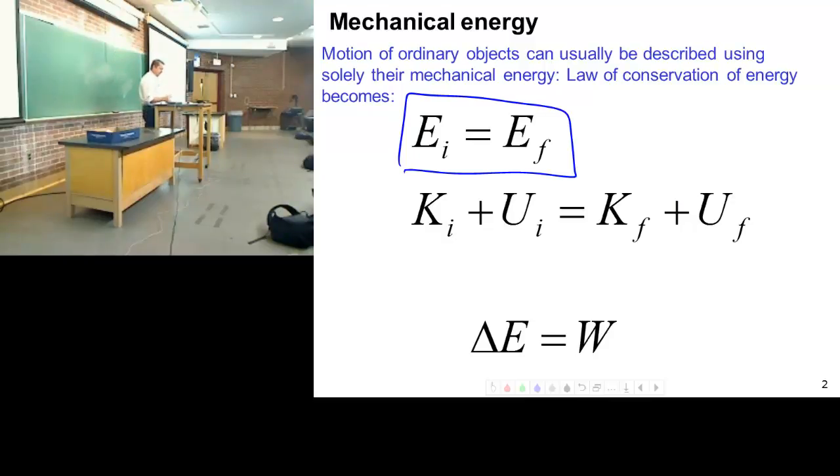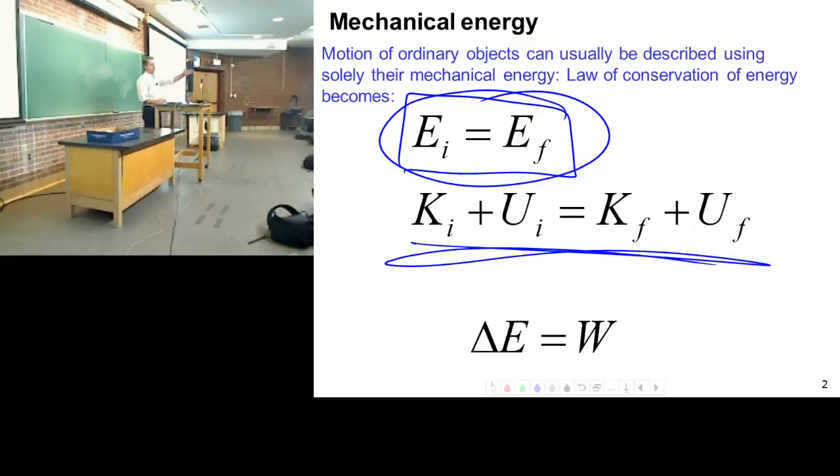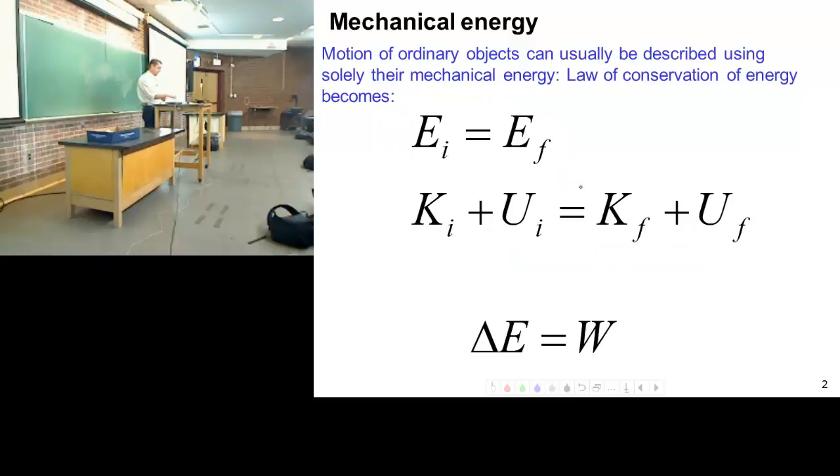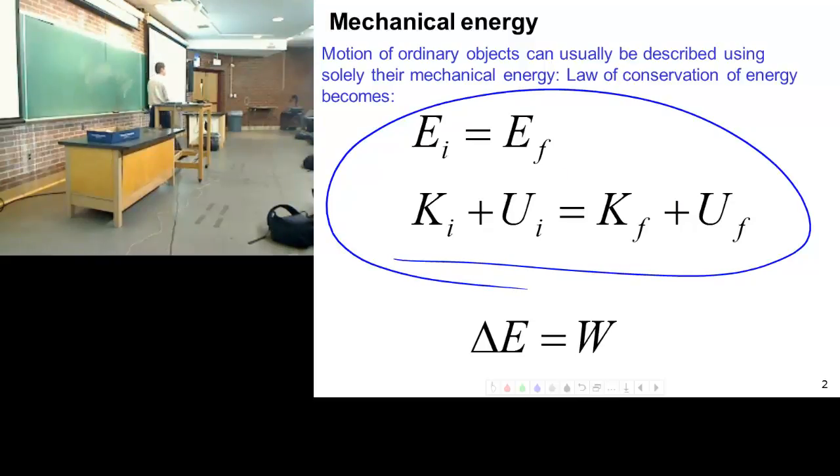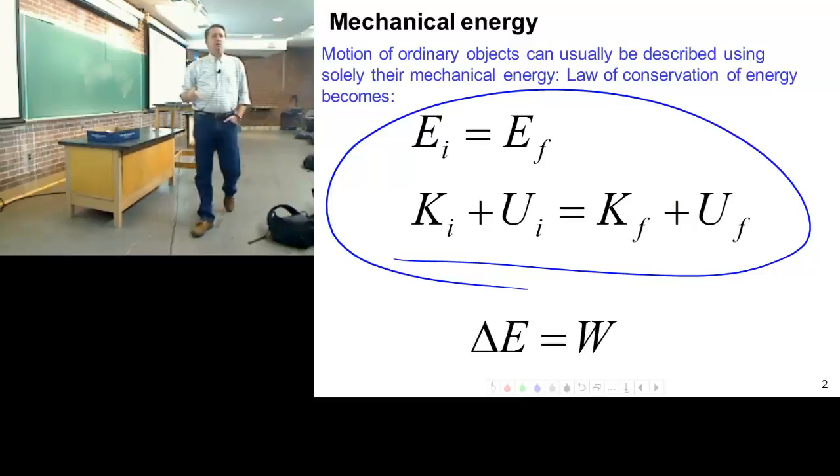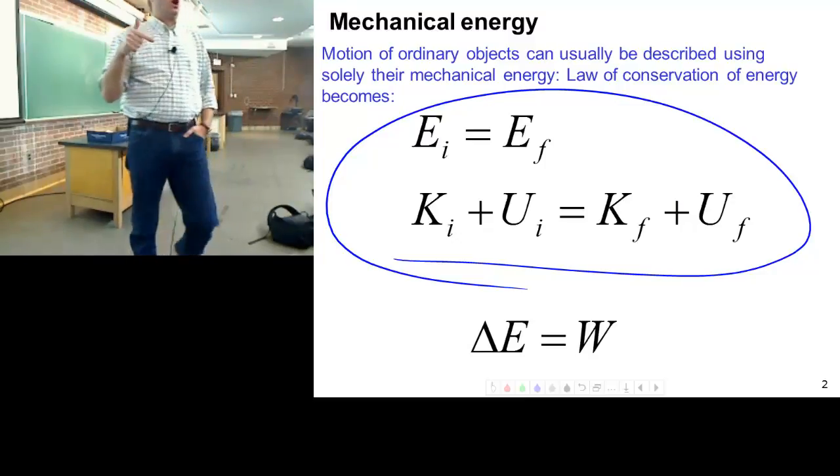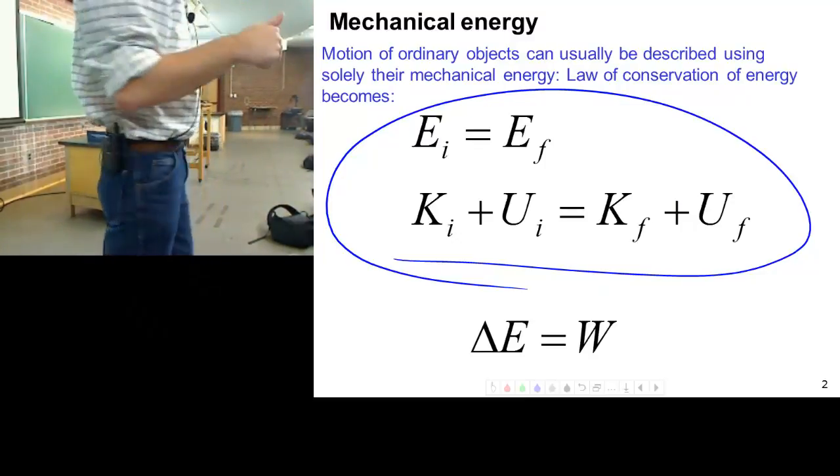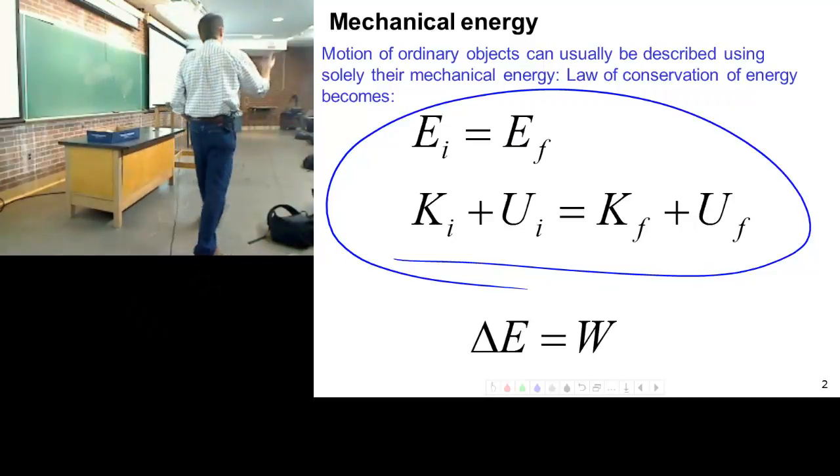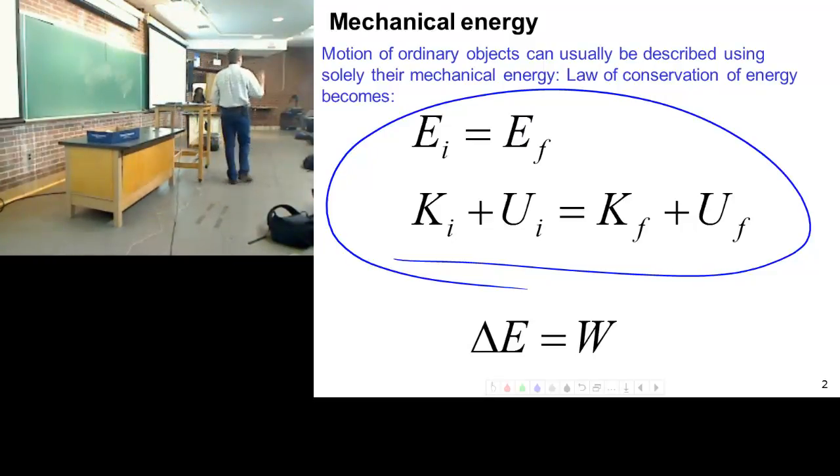So instead of writing out 500 different versions of this equation, this is your equation, and then just learn to work from that basic principle. Now, if we have an isolated system where we have no external forces acting on it, and or we're dealing with conservative forces, gravity. Gravity is a conservative force, which means we can get back what we put into it.